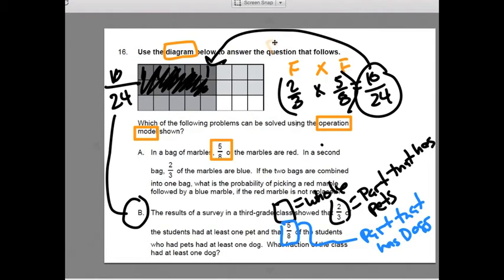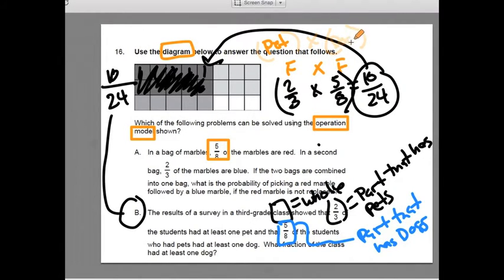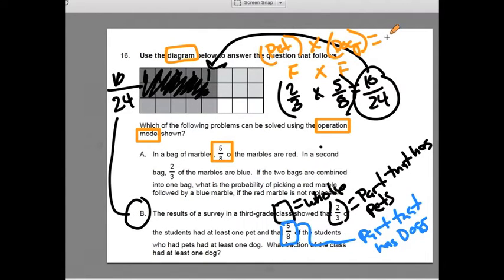So 2 thirds have pets, and out of the 2 thirds, 5 eighths have dogs. The part of the class that has pets that are dogs is 5 24ths. B is the answer.